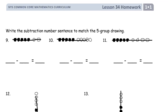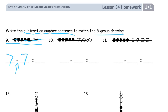Now we have to write the subtraction number sentence to match the five-group drawing. Here's our five-group drawing for 9. How many did we have before we crossed anything out? All of them — 1, 2, 3, 4, 5, 6, 7. We had 7. How many did we subtract — how many did we cross out? All 7. And how many were left after we crossed them out? 0.